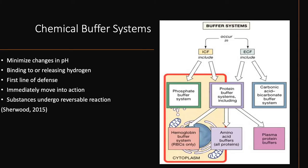Now let's first take a look at what chemical buffer systems are. A chemical buffer system is a mixture in a solution of two chemical compounds that minimize pH changes when either an acid or base is added to or removed from the solution. Buffer systems are the first line of defense against changes in the concentration of hydrogen in the body's fluid and move into action immediately.